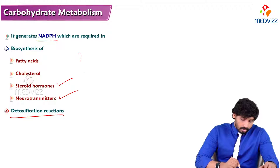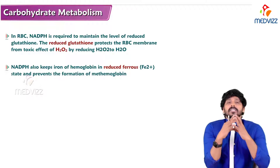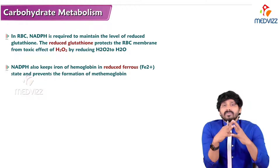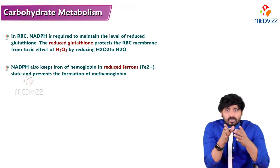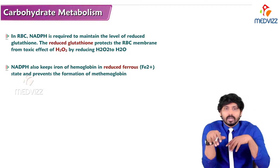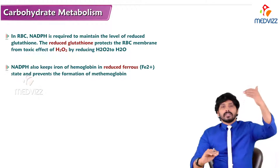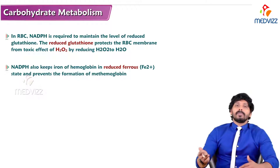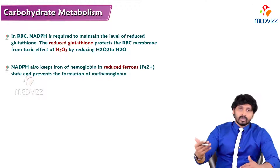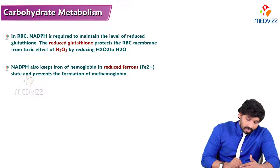In RBC, the requirement for NADPH is critical. The biconcave shape of RBC is essential for its functional activity — it allows the cell to slip through turns and bends — and this shape is maintained by reduced glutathione. The cell membrane integrity is maintained by the reduced form of glutathione. This reduced glutathione is regenerated with the help of NADPH. When glutathione continuously reacts with hydrogen peroxide it becomes oxidized, and this oxidized glutathione must be converted back to reduced glutathione using NADPH. Additionally, NADPH keeps the iron of hemoglobin in reduced ferrous form and prevents formation of methemoglobin.